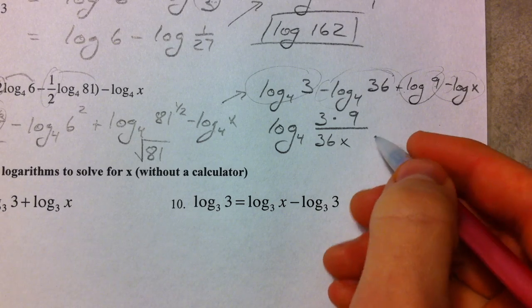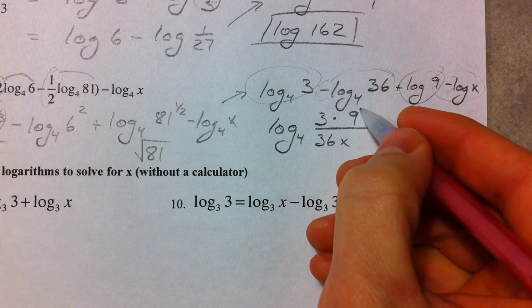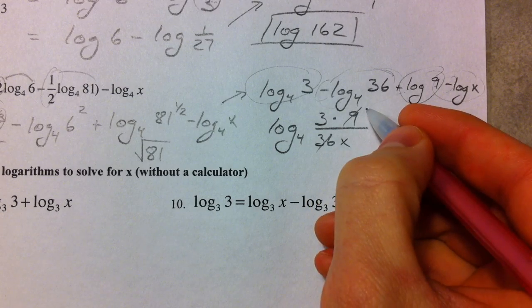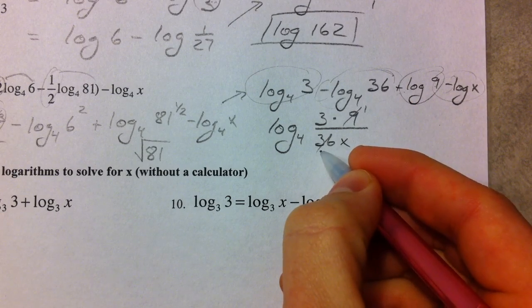So we can cross cancel some here, 9 and 36 becomes 1 and 4.